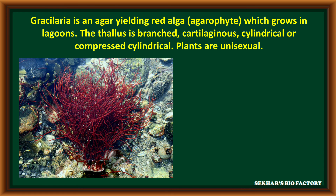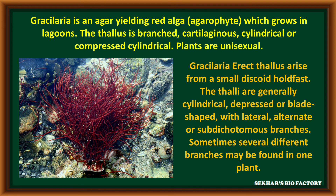The third example is Gracilaria. Gracilaria is an agar-yielding red alga, so it is called an agarophyte, which grows in lagoons. The thallus of Gracilaria is branched, cartilaginous, cylindrical or compressed cylindrical, and these plants are unisexual in nature. Gracilaria has an erect thallus arising from a small discoid holdfast. The thallus is generally cylindrical, depressed or blade-shaped with lateral alternate and sub-dichotomous branches. Sometimes several different types of branches may be found in one plant only.